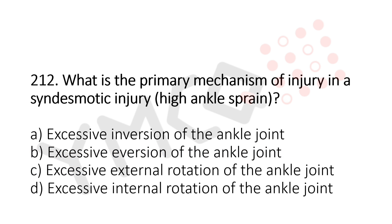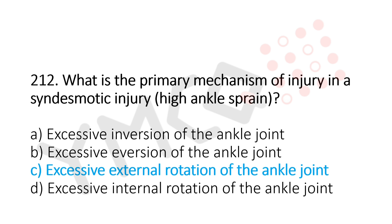Question 212: What is the primary mechanism of injury in a syndesmotic injury, also known as a high ankle sprain? Option A: excessive inversion of the ankle joint. Option B: excessive eversion of the ankle joint. Option C: excessive external rotation of the ankle joint. Option D: excessive internal rotation of the ankle joint. The answer is option C, excessive external rotation of the ankle joint.